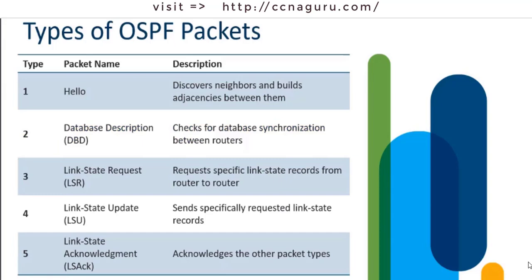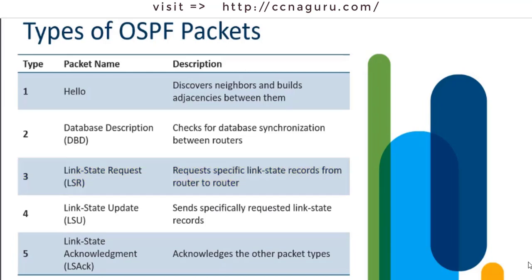The Type 3 packet is the Link State Request, known as an LSR. This is used to request more information from another router about a specific entry in the Database Description message.